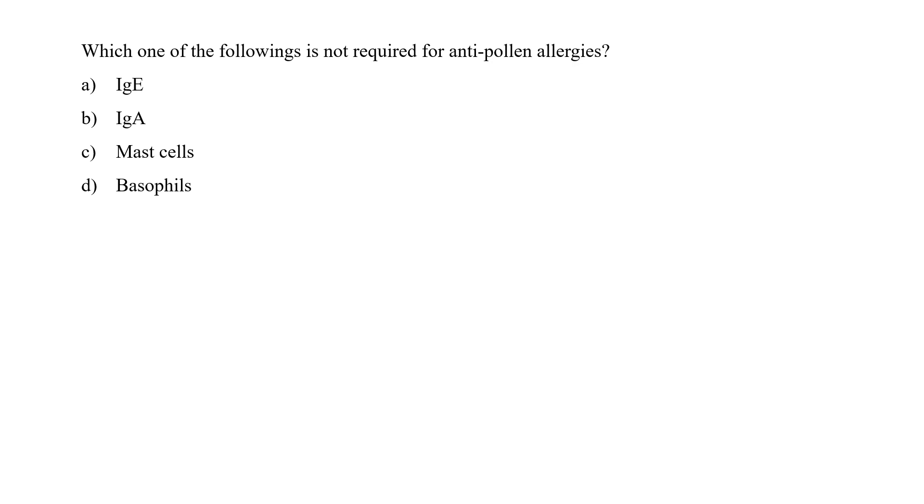Which one of the following is not required for anti-pollen allergy? IgE, IgA, mast cells, or basophils? It is a very simple question. IgE, as you know, sits over the mast cells and basophils and detects the allergens. So once the detection is complete in response to that, mast cells and basophils are being triggered to release histamine which causes the allergy. So IgE, mast cells, and basophils are important components for allergic reactions. IgA, on the other hand, is present in the mucus area to provide defense against microbes. So option B would not be part of the allergic reactions.